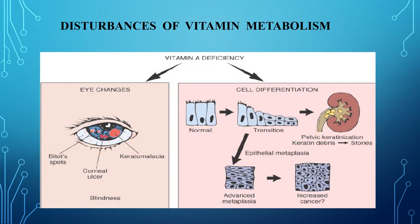Vitamins are biologically active substances with low molecular weights, important for normal course of metabolism and vital functions of the body. Most vitamins act as coenzymes or enzyme components. Vitamins are divided into two groups: fat-soluble (vitamins A, D, E, K) and water-soluble (B group vitamins, vitamin C, and others). The main disorders of vitamin metabolism include vitamin deficiency, hypovitaminosis, hypervitaminosis, and disvitaminosis. Vitamin deficiency develops as a result of lack of a vitamin in the body or the inability to carry out its action.